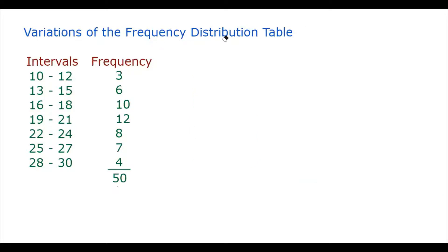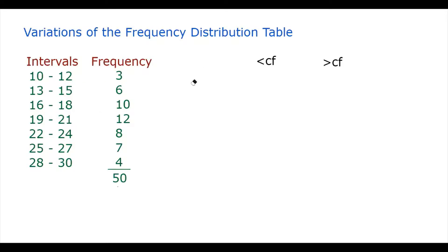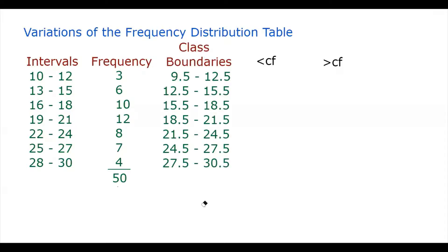Continuing with the variations of the frequency distribution table, we can also construct the less than cumulative frequency and the greater than cumulative frequency distributions. The less than cumulative frequency counts the number of observations less than a given upper class boundary. We need to know the class boundaries, or true class limits, of this distribution. For the first class interval, the number of observations less than 12.5 is 3.